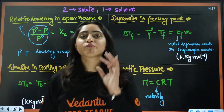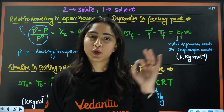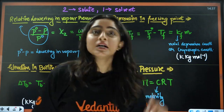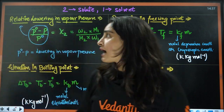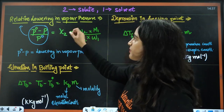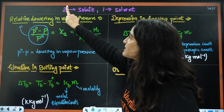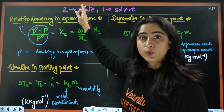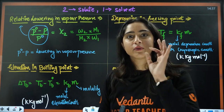Next, we have the colligative properties — very, very important. Questions are usually asked from colligative properties and the Van't Hoff factor. We have four colligative properties. Starting with relative lowering in vapor pressure. Always remember: in all my formulas, I will denote 2 as solute and 1 as solvent.